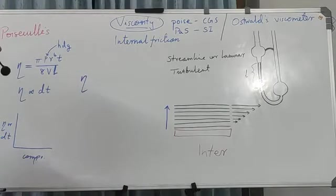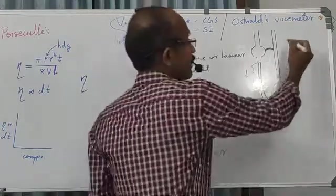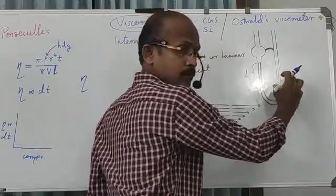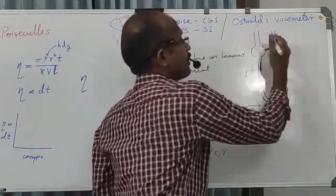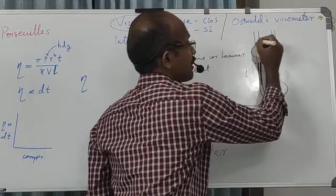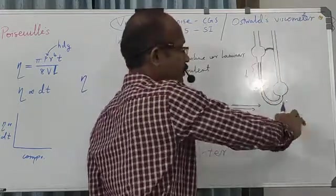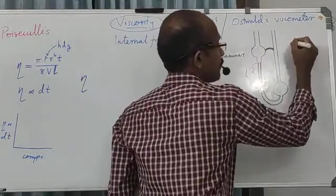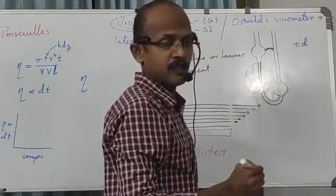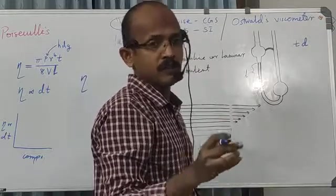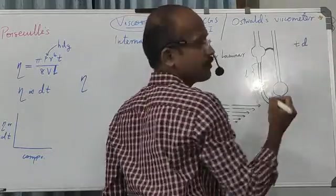To determine relative viscosity, we take one liquid — say 20 ml is pipetted into the glass bulb of the viscometer. We suck the liquid up to the upper mark, similar to using a pipette, then release the thumb. The liquid starts flowing through the capillary tube. For the first liquid, we record the time of flow and calculate density as mass divided by volume — using the particular volume taken and measuring its mass. So we obtain T and D values.